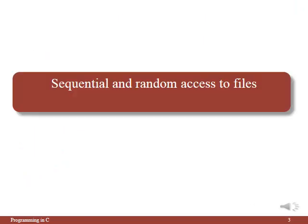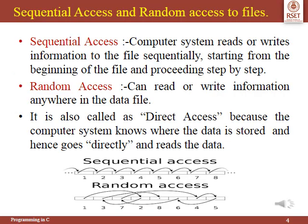We will move into our first topic: sequential access and random access to files. In sequential access, the computer system reads or writes information to the file sequentially, starting from the beginning and proceeding step by step towards the end. Random access means the computer system can read or write information anywhere in the data file. This is also called direct access. Sequential access has advantages when you access information in the same order all the time, and it is faster than random access.